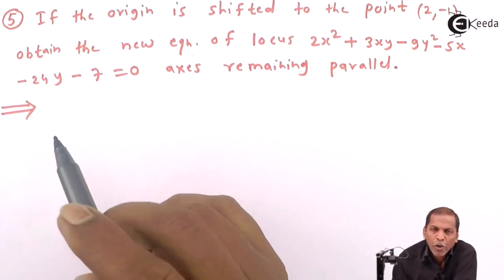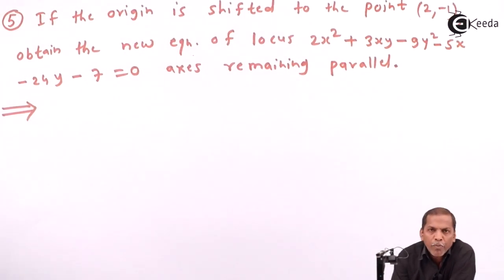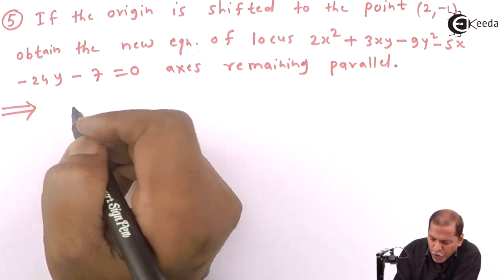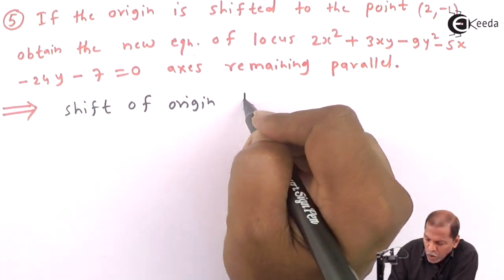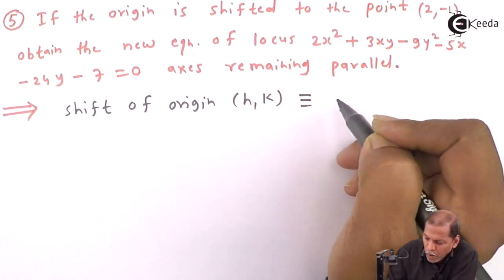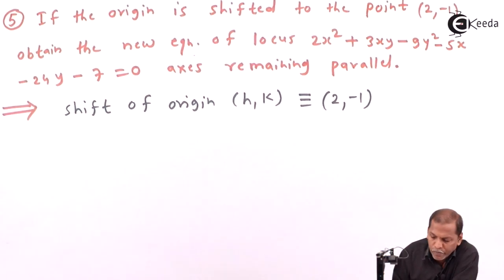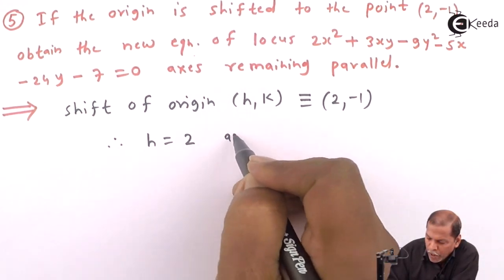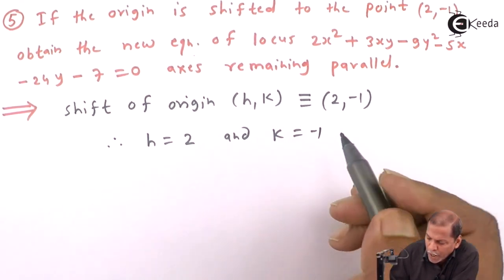Now let's see the solution. In this question we are given that the origin is shifted to the point (2, -1). This means a shift of origin, so we get h = 2 and k = -1.